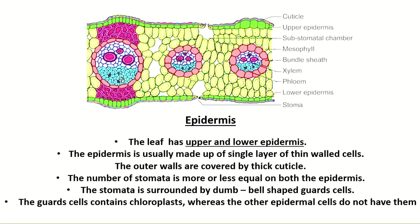The leaf has an upper and a lower epidermis. In the picture, you can find the upper epidermis and the lower epidermis. Both epidermis layers are usually made up of a single layer of thin-walled parenchyma cells, and both layers are covered — that is, their outer walls are covered — by a thick cuticle. The number of stomata is more or less equal in both upper and lower epidermis, whereas in the dicot leaf the number of stomata is more in the lower epidermis compared to the upper epidermis.